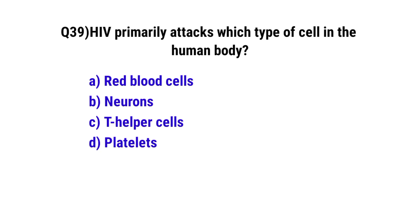Question number 39. HIV primarily attacks which type of cell in the human body? The correct option is C. T-helper cells.